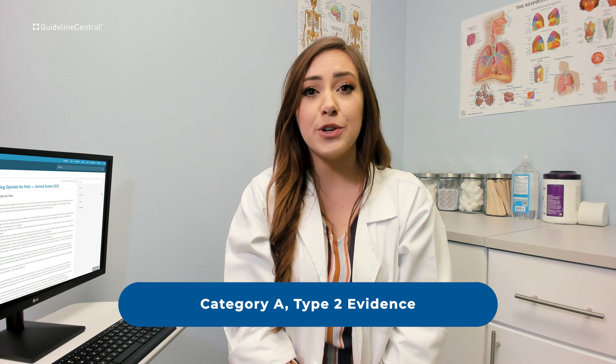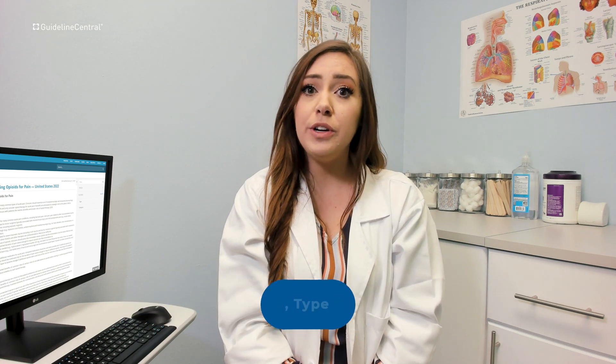Our next recommendation was given a category A, type 2 evidence grading, for the recommendation that non-opioid therapies are preferred for subacute or chronic pain. Clinicians should maximize the use of non-pharmacological and non-opioid pharmacological therapies, and should only consider initiating opioid therapy if the expected benefits for pain and function are anticipated to outweigh the risks. Before starting opioid therapy for subacute or chronic pain, clinicians should discuss realistic benefits and known risks with patients, work to establish treatment goals for pain and function, and consider how opioid therapy will be discontinued if the benefits do not outweigh the risks.